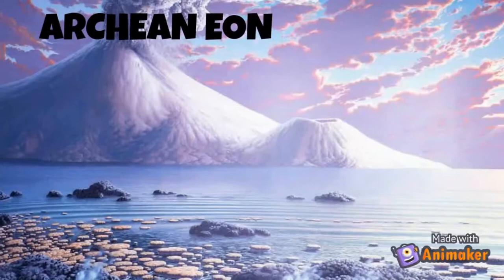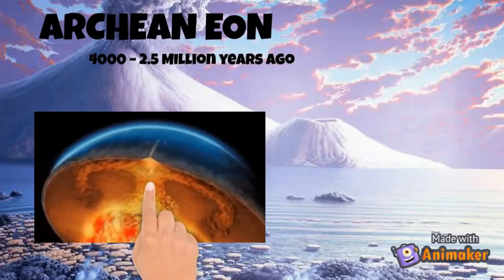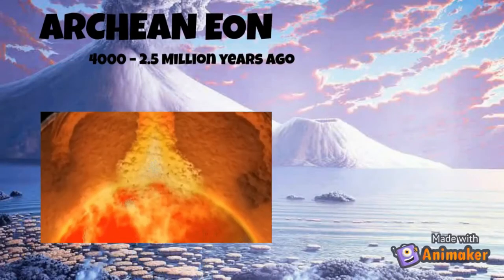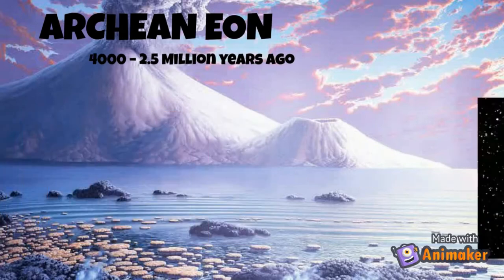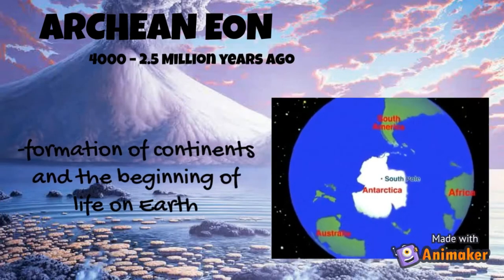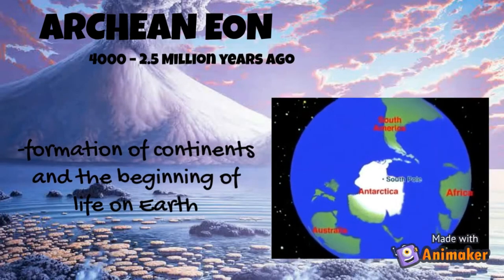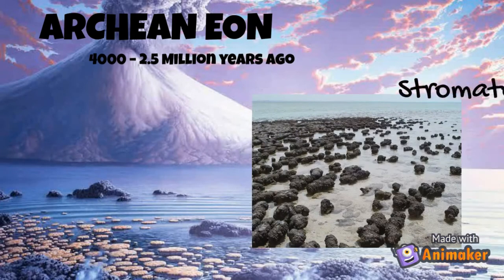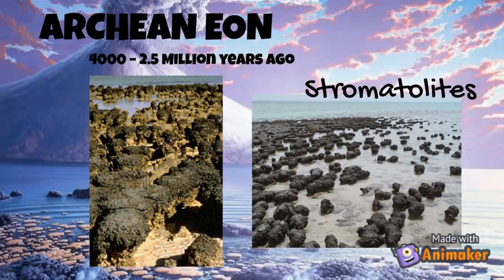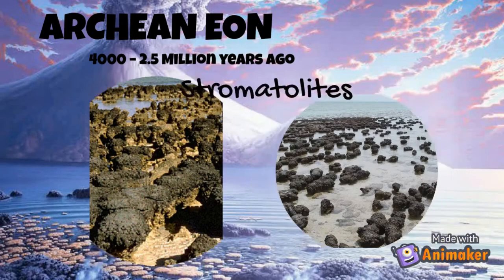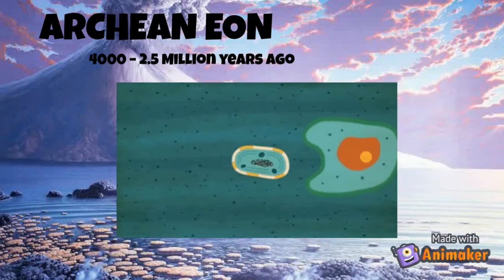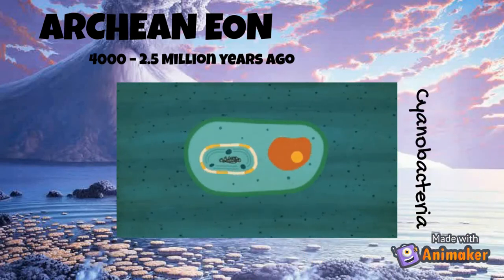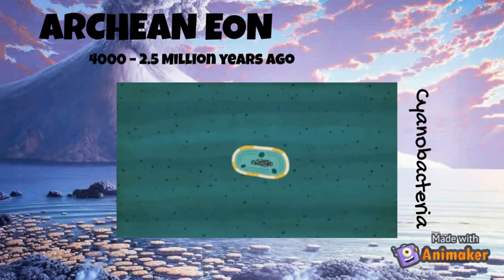Next was the Archean eon, which was 4,000 to 2.5 billion years ago. Here, the Earth's crust had cooled enough, allowing the formation of continents and the beginning of life on Earth. Rocks like stromatolites were present. This is when the cyanobacteria, an aquatic and photosynthetic usually unicellular bacteria, emerged.